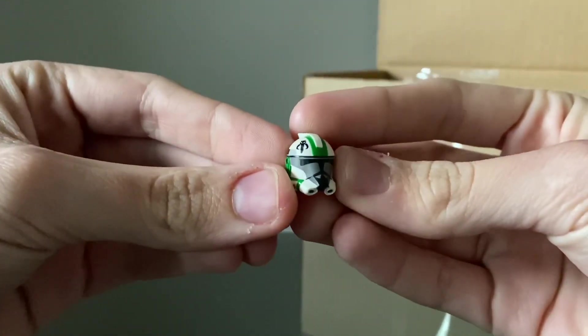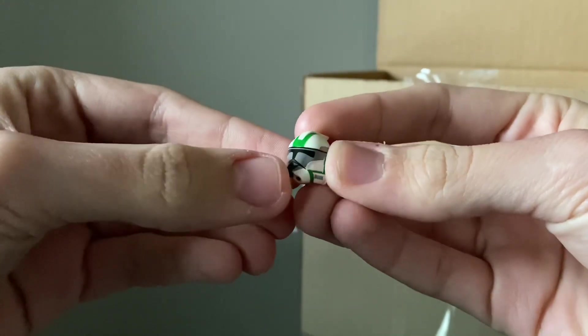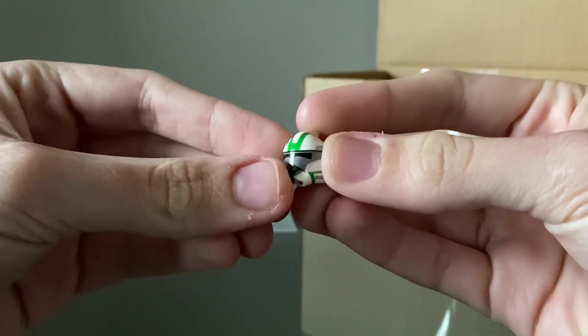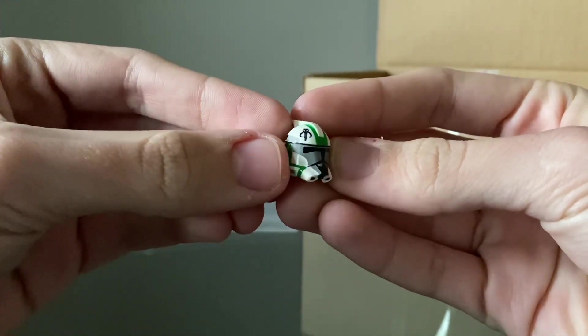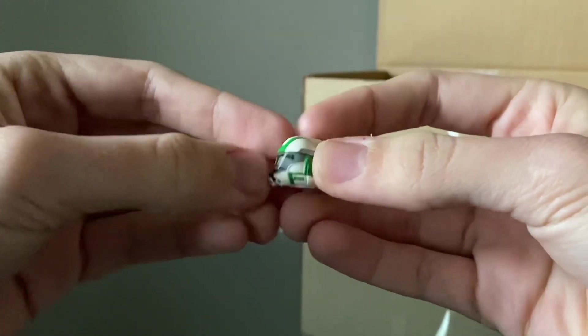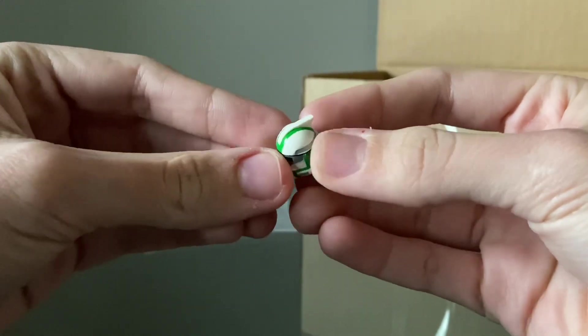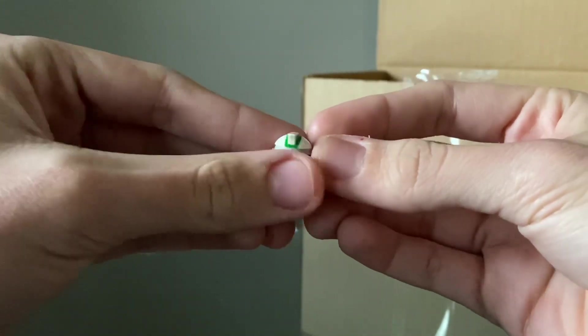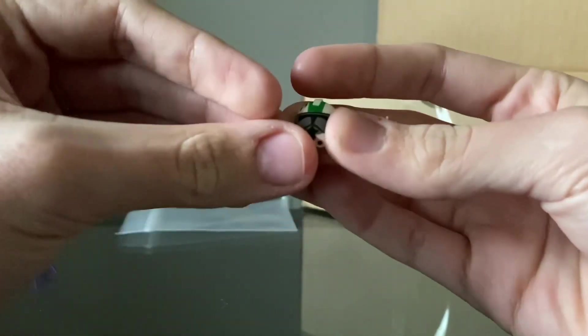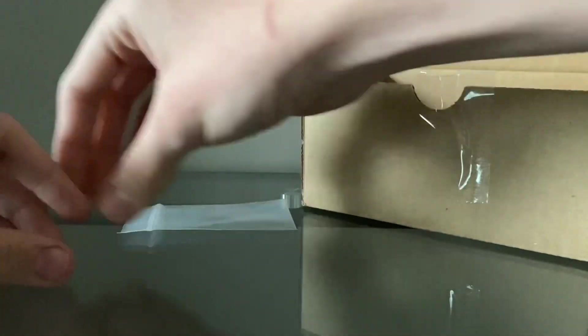We have a helmet. So here we have the ARC Trooper Loco helmet, and man, this looks great. This is the realistic version. I actually had the regular AP2 version before. This is definitely awesome to have in the army now.